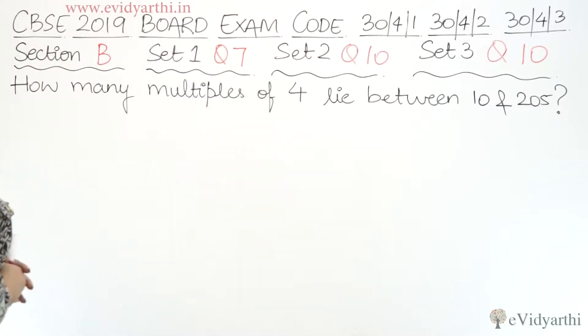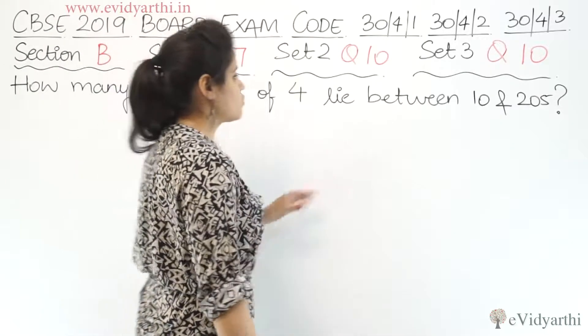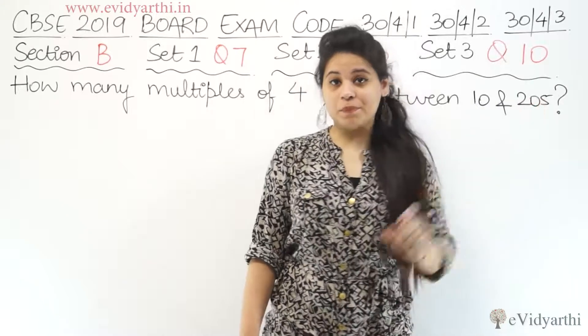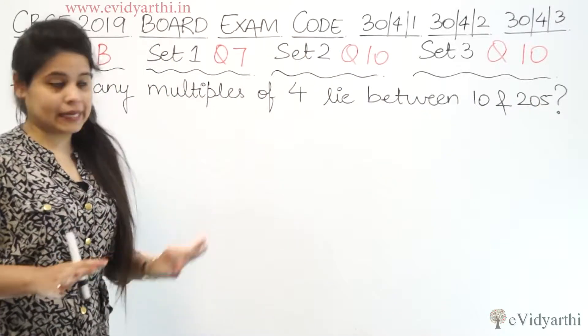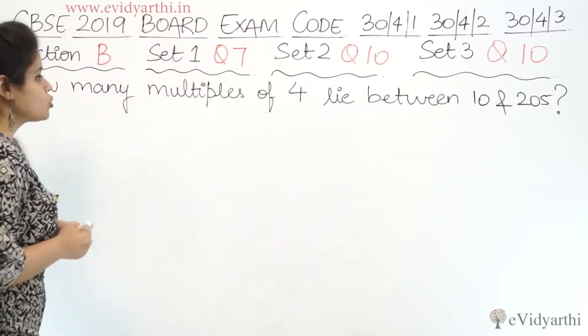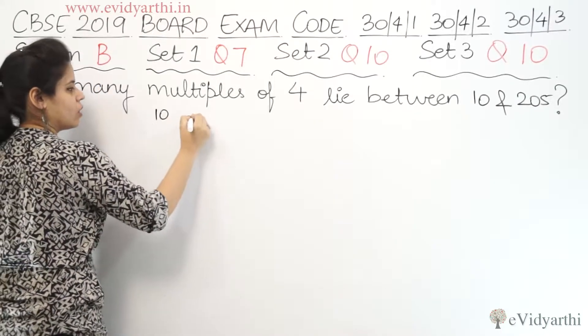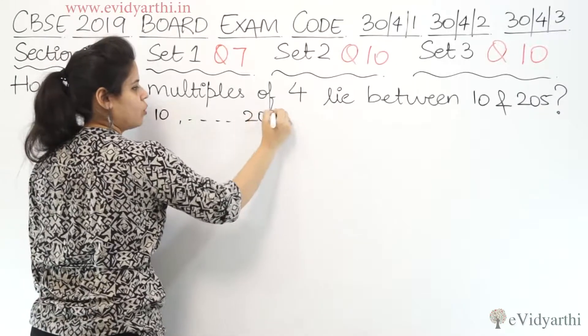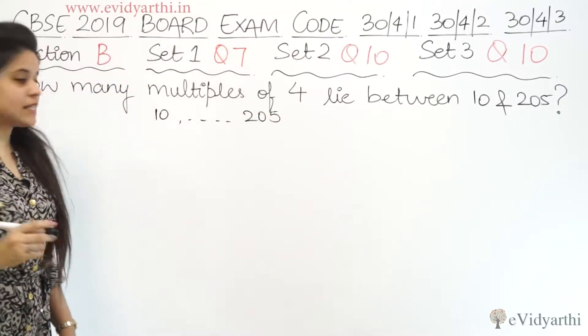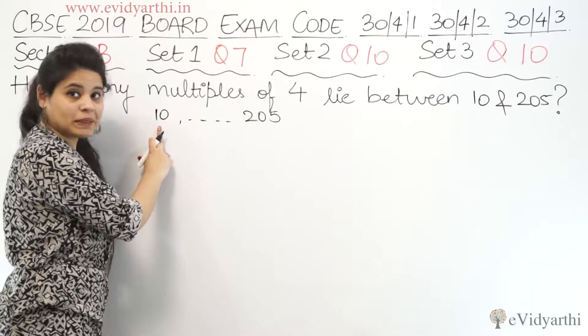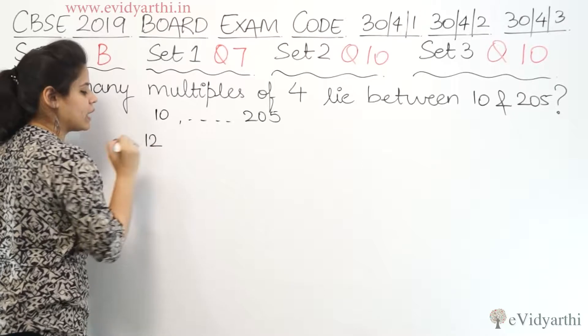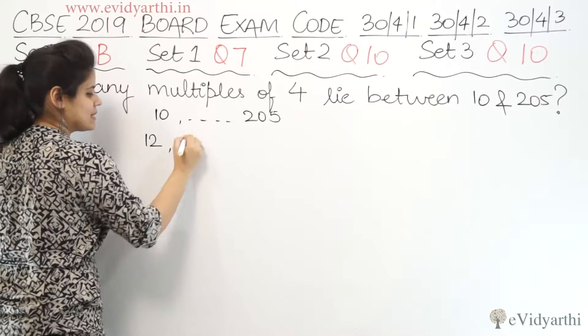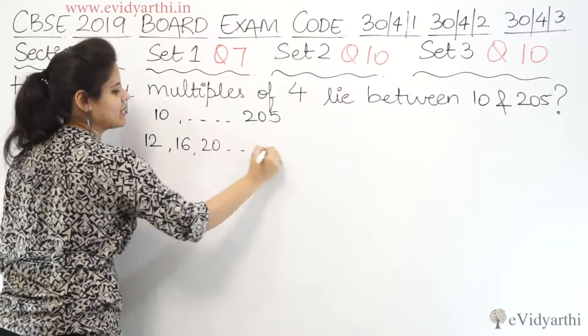The question says how many multiples of 4 lie between 10 and 205. So between 10 and 205, how many multiples of 4? This is a question of AP. So 10 to 205. 10 is not a multiple. 11, 12 - 12 is divisible by 4. Then 16, 20 and so on.